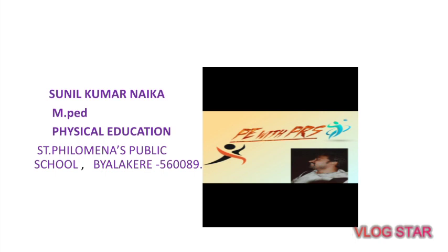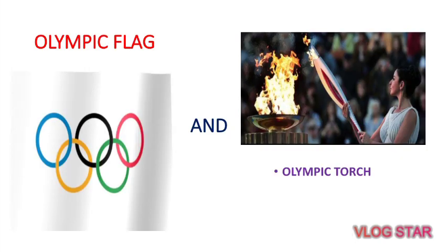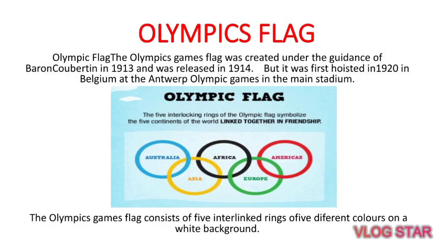The Olympic Games Flag was created under the guidance of Baron de Coubertin in 1913 and was released in 1914, but it was first hosted in 1920 in Belgium. The Olympic Games Flag consists of five interlocking rings of five different colors on a white background.